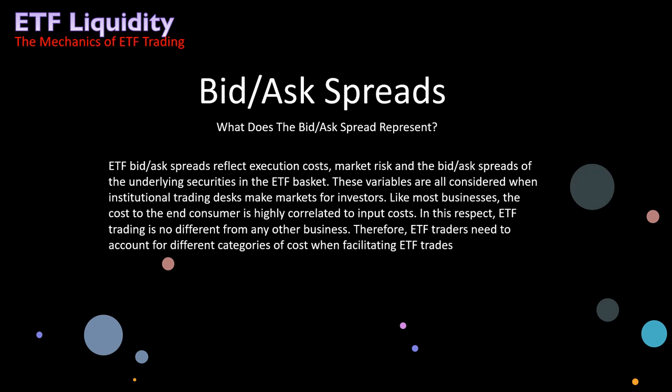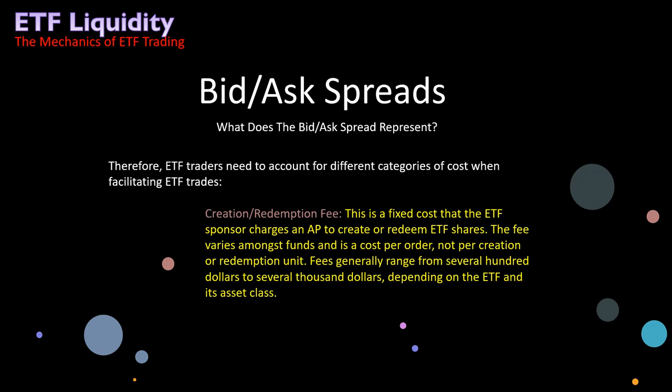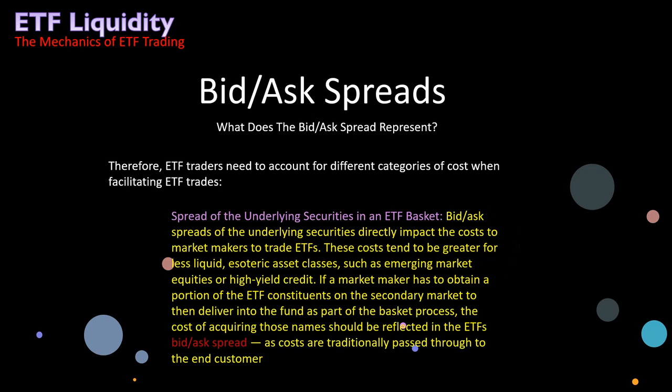ETF traders need to account for different categories of cost when facilitating ETF trades. One category is creation and redemption fees — a fixed cost that the ETF sponsor charges to an authorized participant to create or redeem ETF shares. The fee varies amongst funds and is a cost per order, not per creation or redemption unit. Fees generally range from several hundred to several thousand dollars depending on the ETF and its asset class.